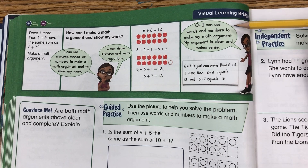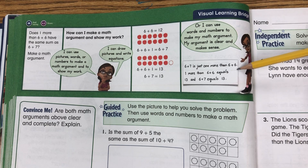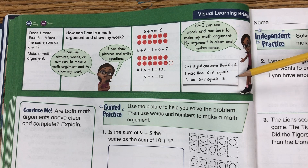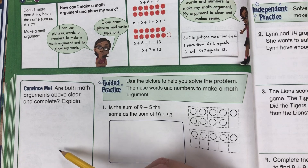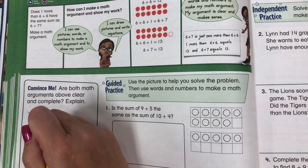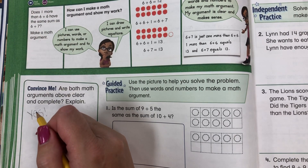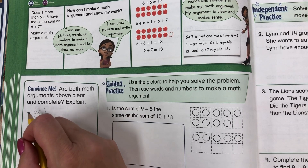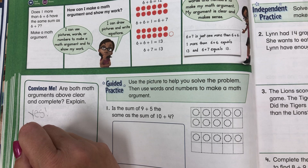Or I can use my words and numbers to make my math argument. My math argument is clear and makes sense. 6 plus 7 is just one more than 6 plus 6. One more than 6 plus 6 equals 13, and 6 plus 7 equals 13. Convince me — are both math arguments above clear and complete? Yes, they are. Both show that 6 plus 6 plus 1 and 6 plus 7 have the same sum, because they both equal 13.